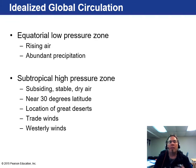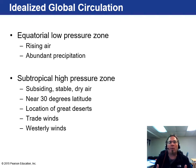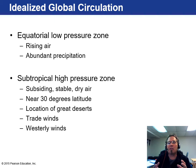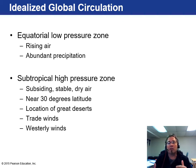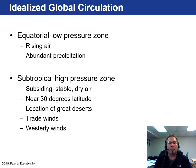These circulation zones include the equatorial low pressure zone, which features lots of rising air and abundant precipitation — essentially the jungle at the equator. There's also the subtropical high pressure zone around 30 degrees latitude, where most of Earth's deserts occur. The Sahara sits at 30 degrees north, and Australia — mostly desert — sits at 30 degrees south. These zones are also associated with the trade winds and westerly winds.